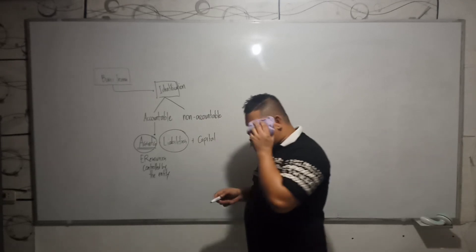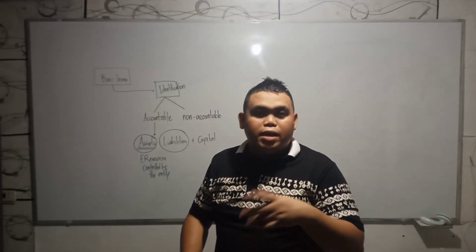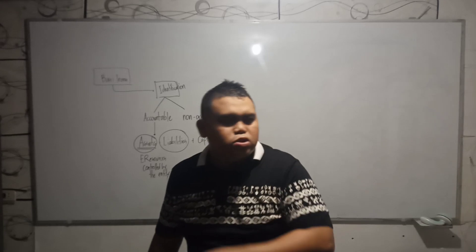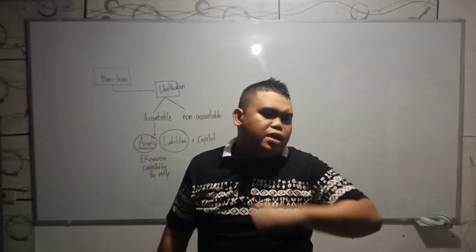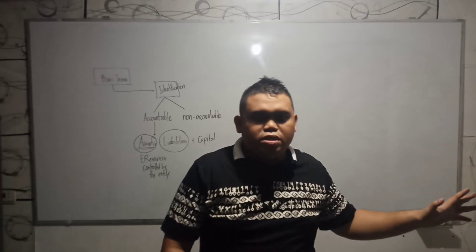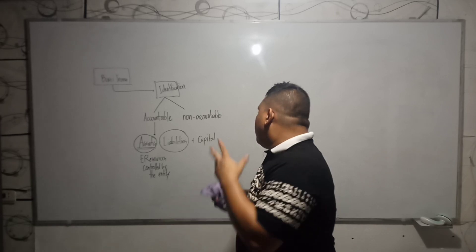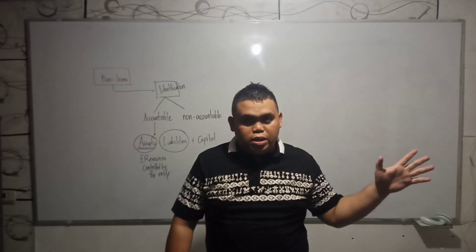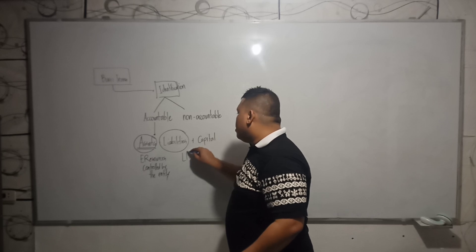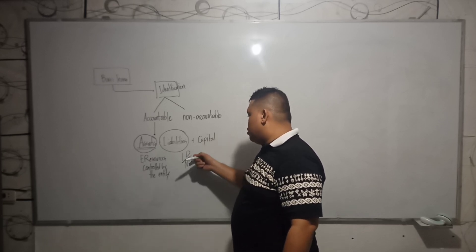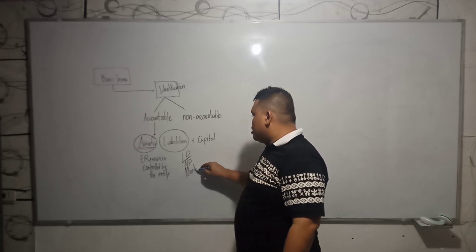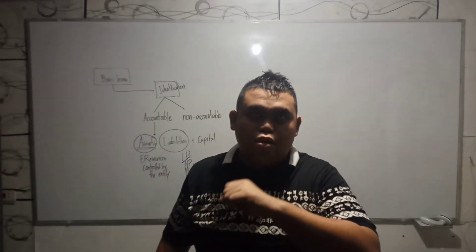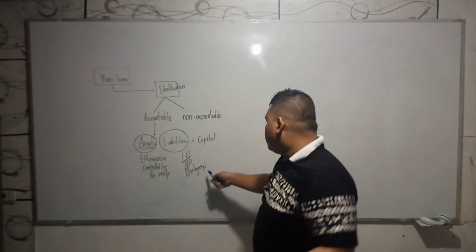We have liabilities. Liabilities, in simple terms, are just the obligations of the entity to third parties. For example, if the entity has a loan of 1 million pesos from Metrobank, and Metrobank is a third party — not an owner — those are considered liabilities. Examples include loans payable, notes payable, bank loans payable, and mortgage payable, where mortgage payable is a loan with a collateral like real properties.